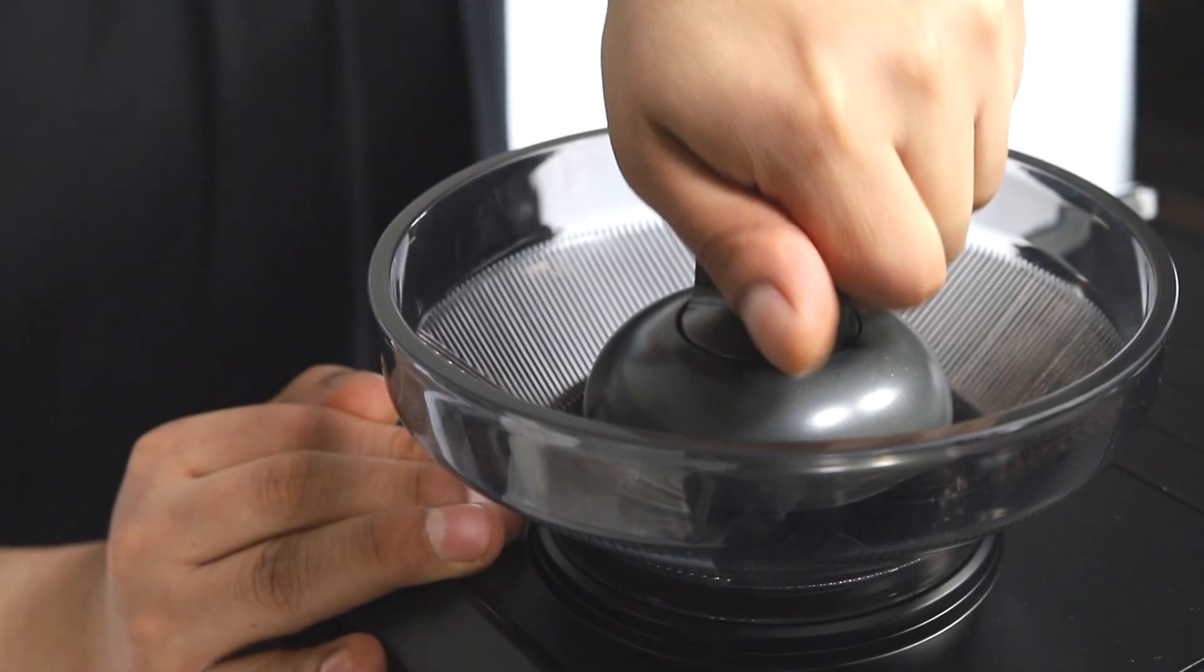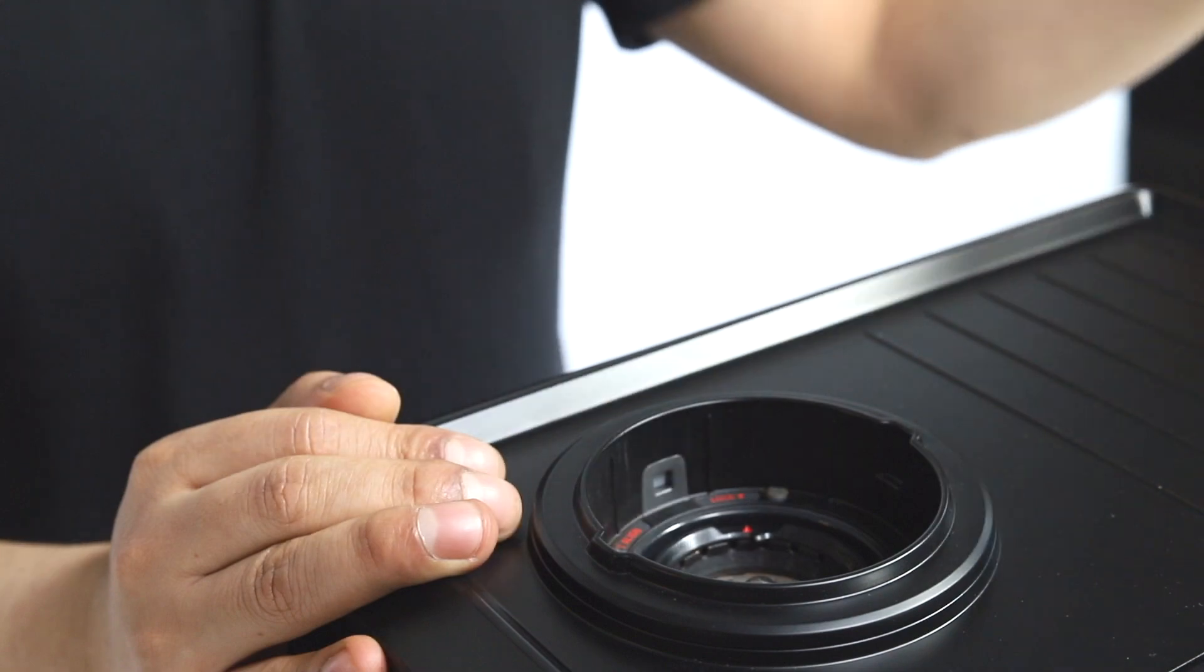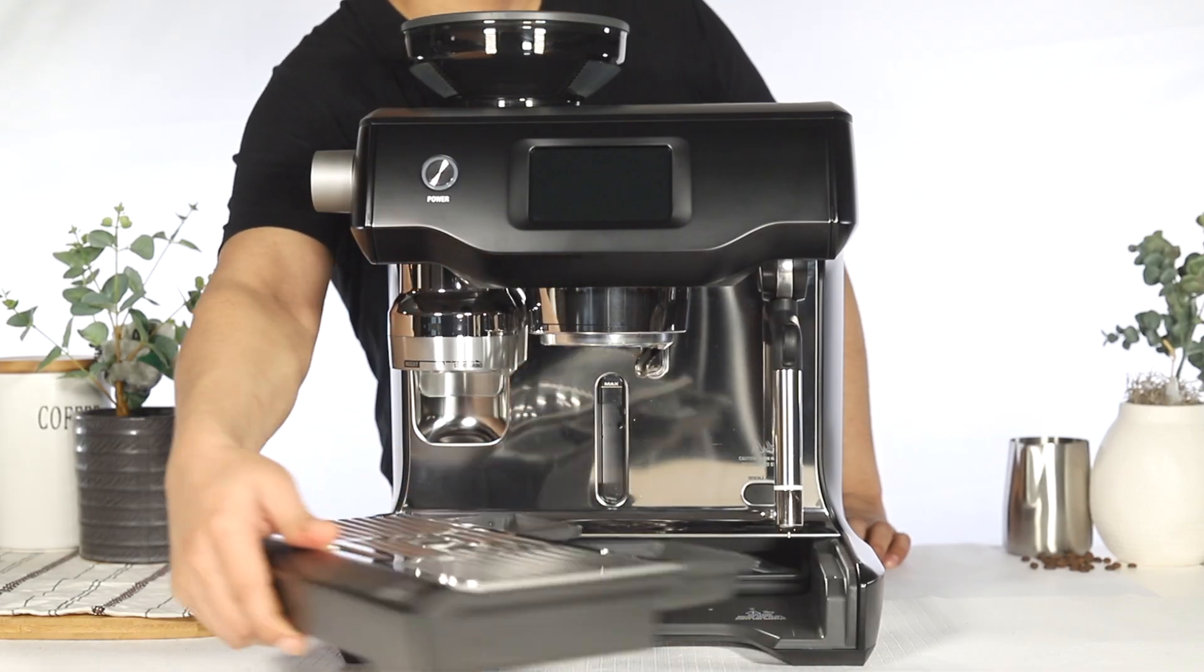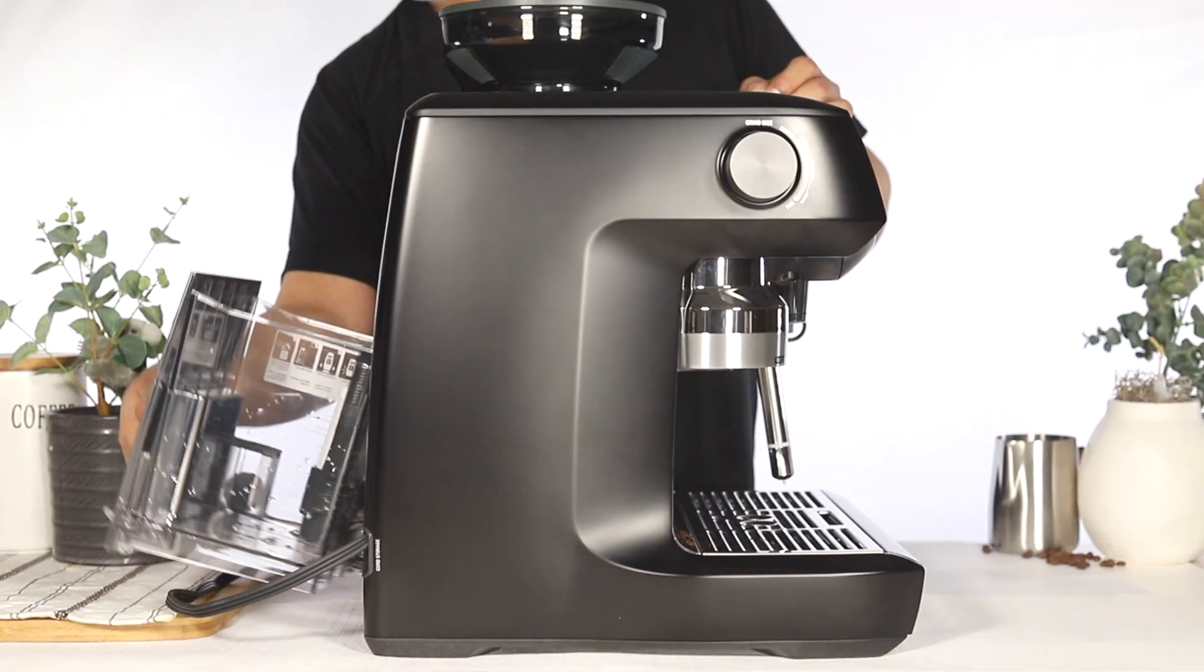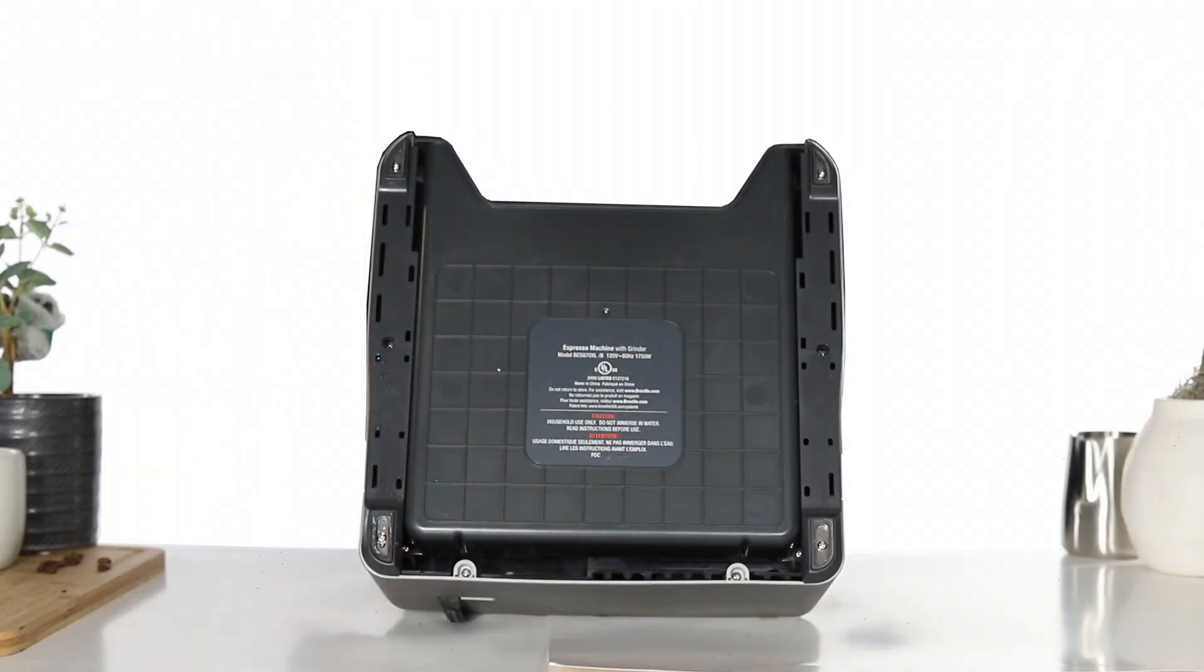If your unit has a grinder, unlock and remove the bean hopper. Remove the drip tray and water tank. Next, gently lay the unit on its back for visible access to the group head.